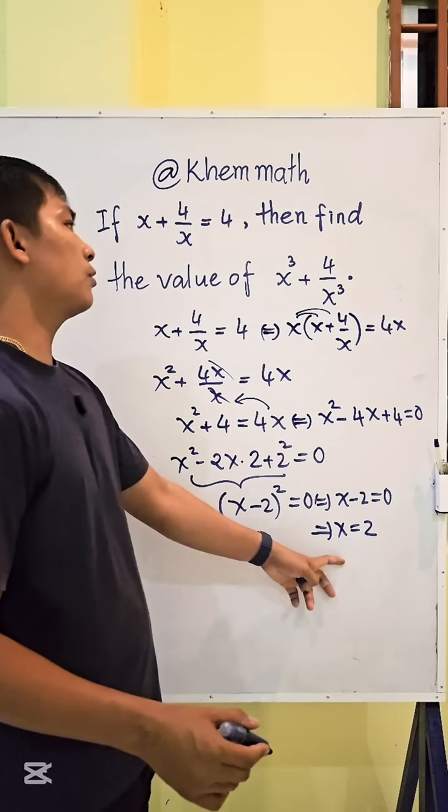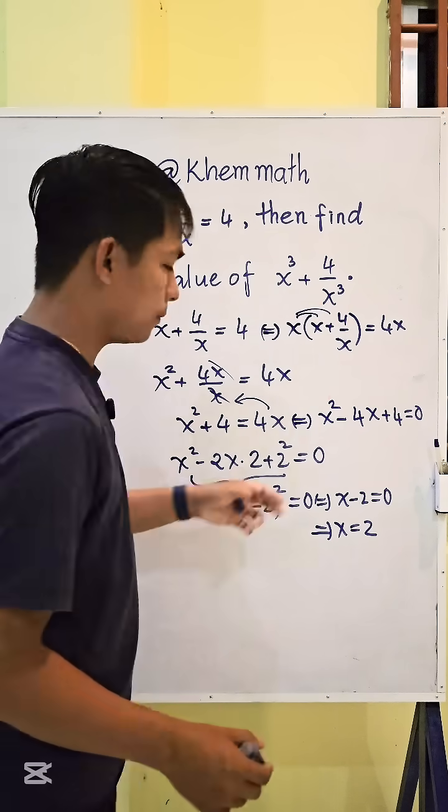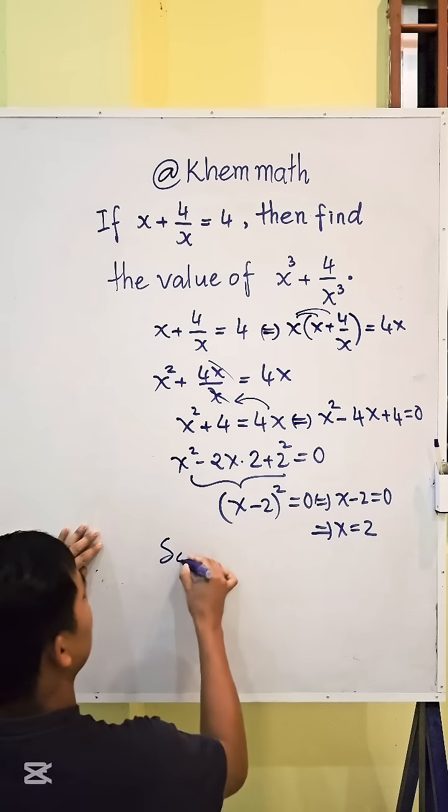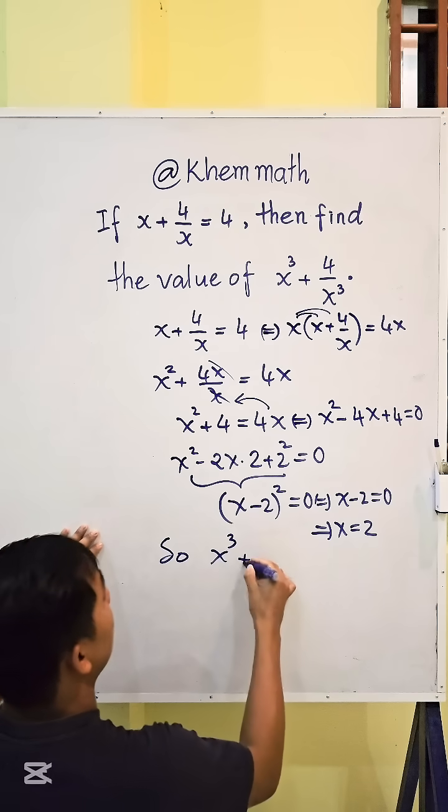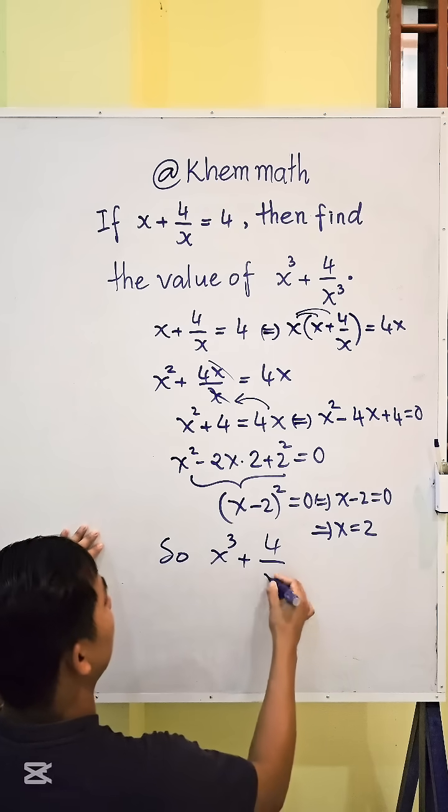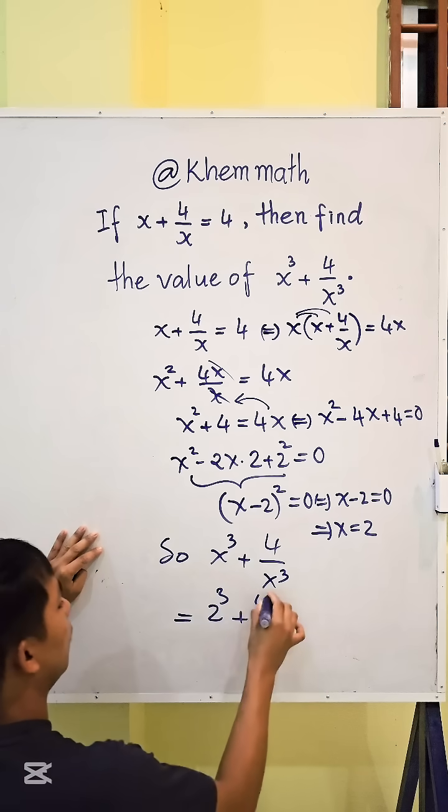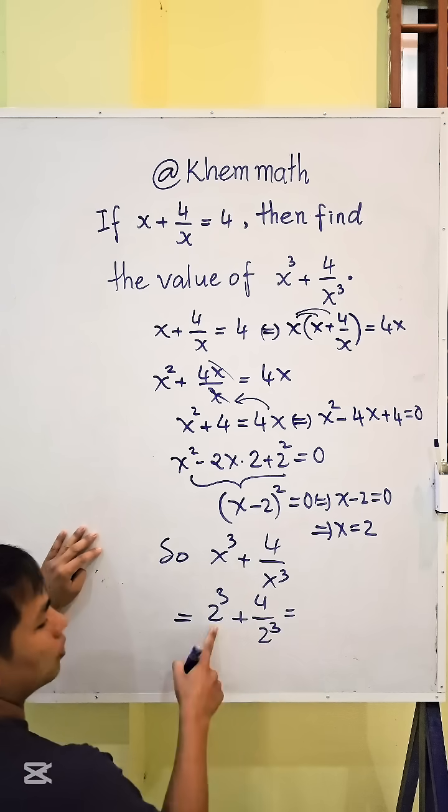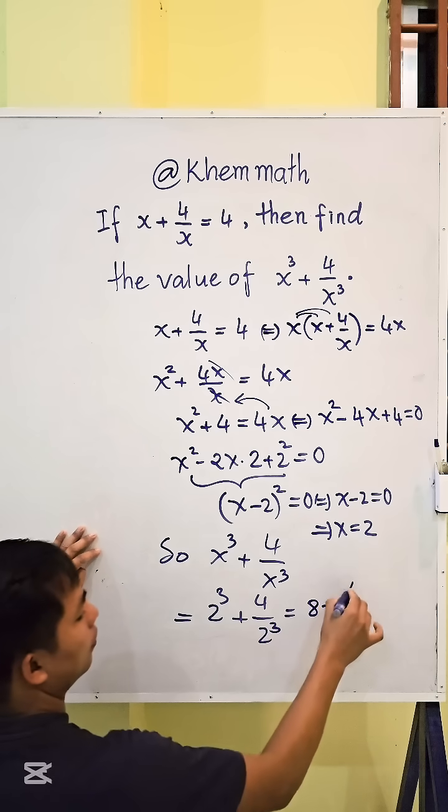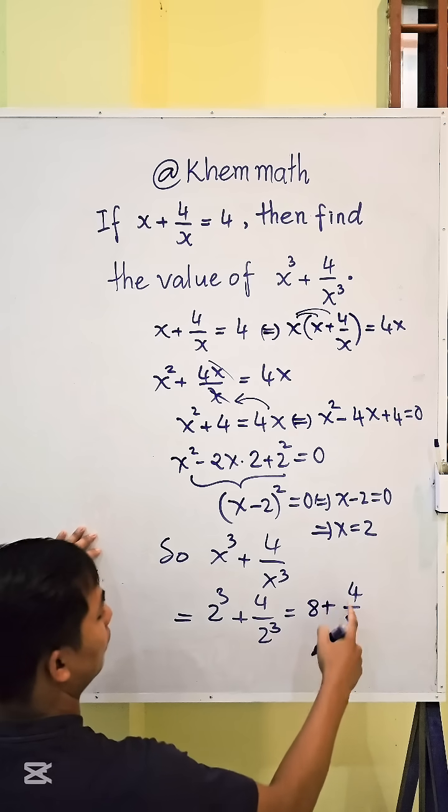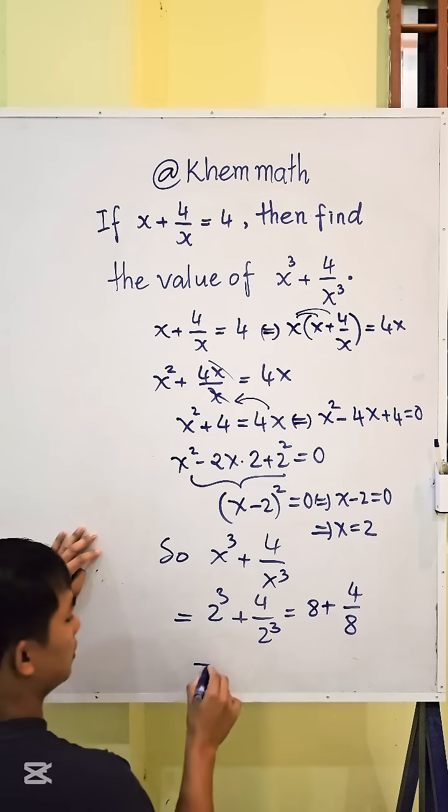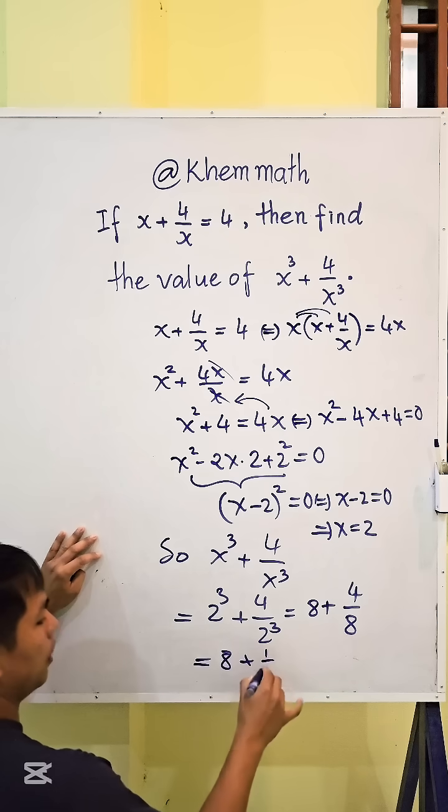So we take 2 to replace in this expression. We get x cubed plus 4 divided by x cubed equals 2 cubed plus 4 divided by 2 cubed.